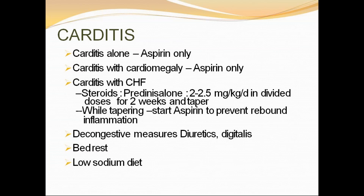Steroids are indicated only for carditis with congestive cardiac failure. The dose is 2 to 2.5 mg/kg/day in divided doses for 2 to 3 weeks, then tapered slowly. If congestive cardiac failure develops, add decongestive measures — diuretics, bed rest, low sodium diet. When tapering prednisolone, add aspirin at 50 mg/kg/day in four divided doses for 6 weeks to prevent rebound inflammation. Termination of anti-inflammatory therapy may be followed by rebound elevation of ESR and CRP.